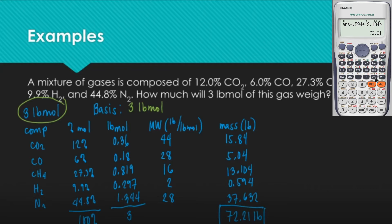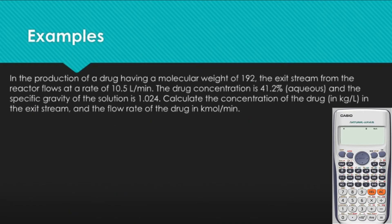You will soon see that these types of problems have the same solution structure. You just have to analyze the problem for what is being asked and then execute your plan of converting one form of composition to another. Let's have our last example. In the production of a drug having a molecular weight of 192, the exit stream from the reactor flows at a rate of 10.5 liters per minute. The drug concentration is 41.2% — it exists as an aqueous solution — and the specific gravity of the solution is 1.024.